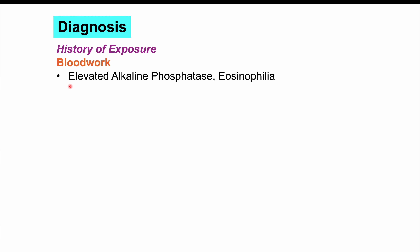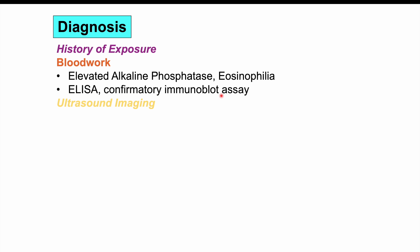Blood work can also be utilized. We're often going to see an elevated alkaline phosphatase, indicating issues in the biliary duct system. Interestingly, ALT and AST — liver enzymes generally elevated in liver inflammation — are not always elevated in this condition. We can also see eosinophilia, an increased level of eosinophils, which are important in dealing with parasitic infections. We can also do an ELISA followed by a confirmatory immunoblot assay to assess for these parasites.